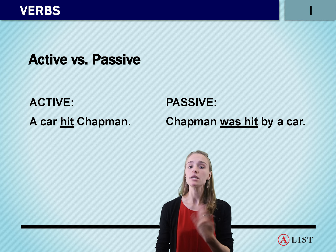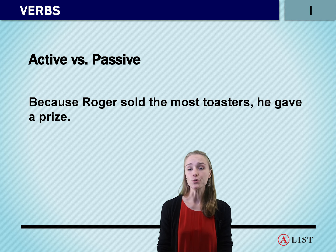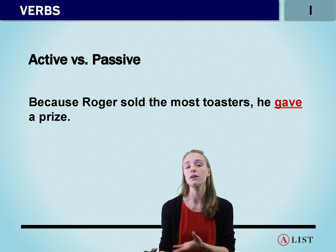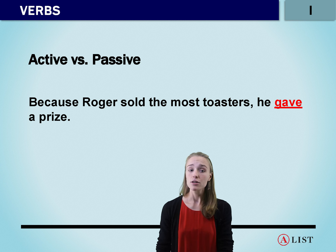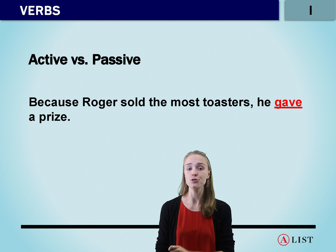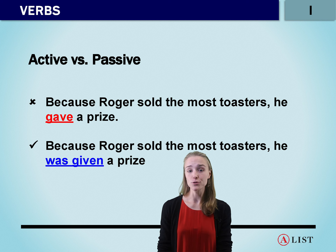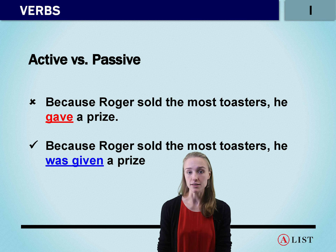Let's look at a couple more examples. We have: 'Because Roger sold the most toasters, he gave a prize.' If he sold the most toasters, it's unlikely he's the one who's giving away a prize — he's probably going to get a prize instead. So currently this is in an active form, but we would like to make it passive: 'Because Roger sold the most toasters, he was given a prize.' That becomes passive.